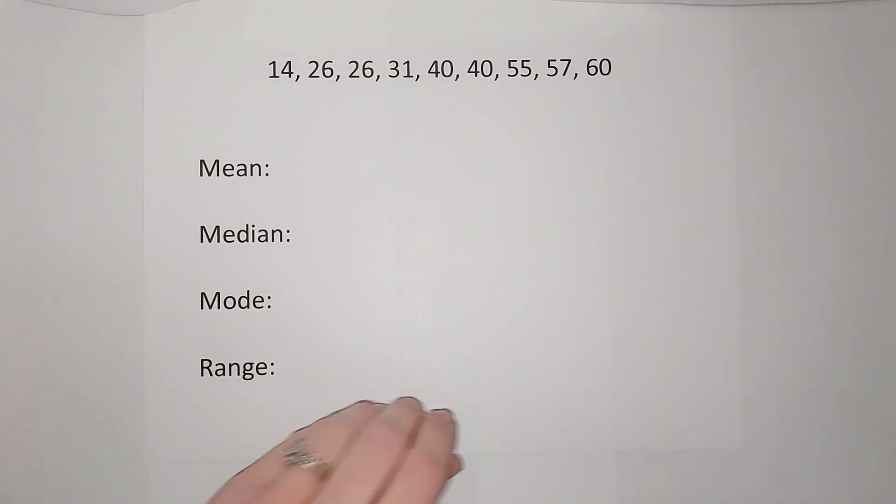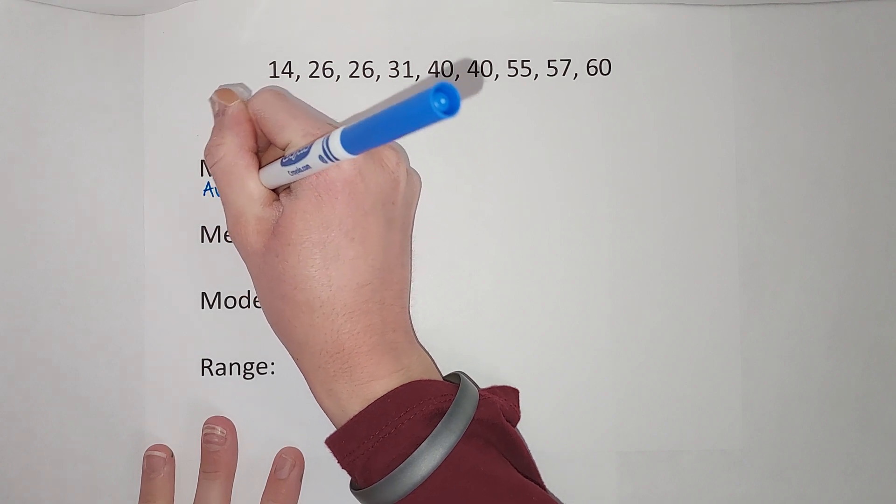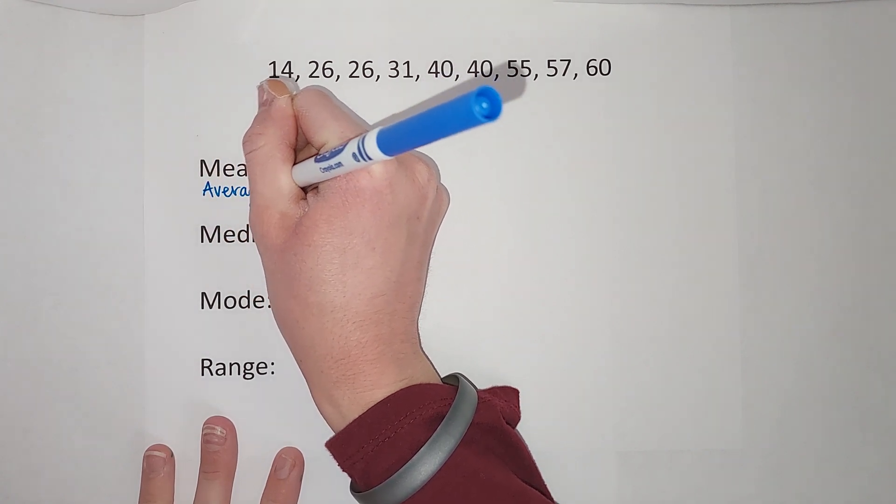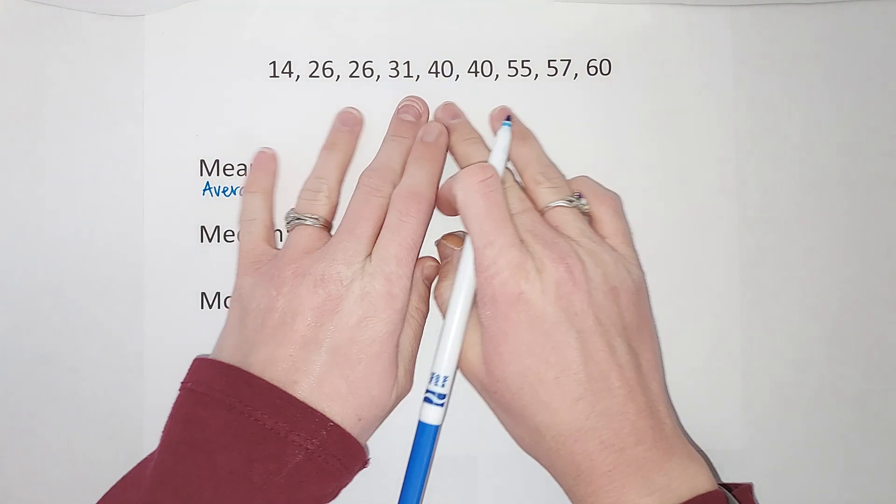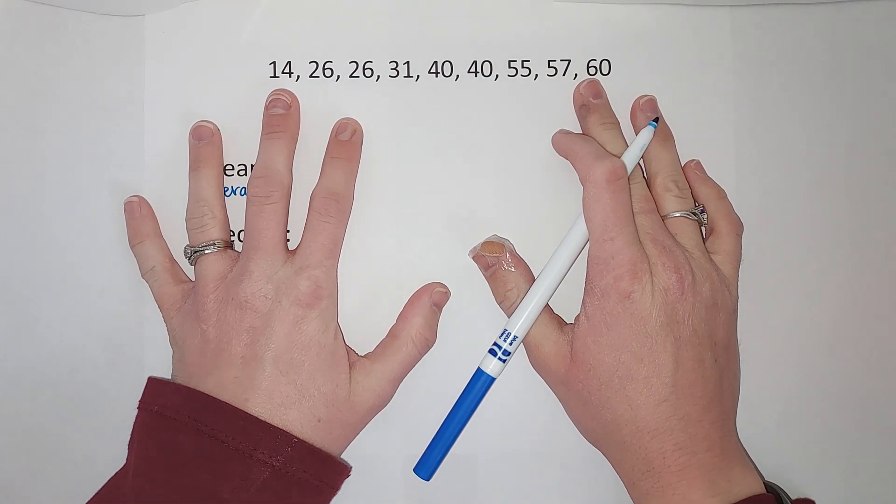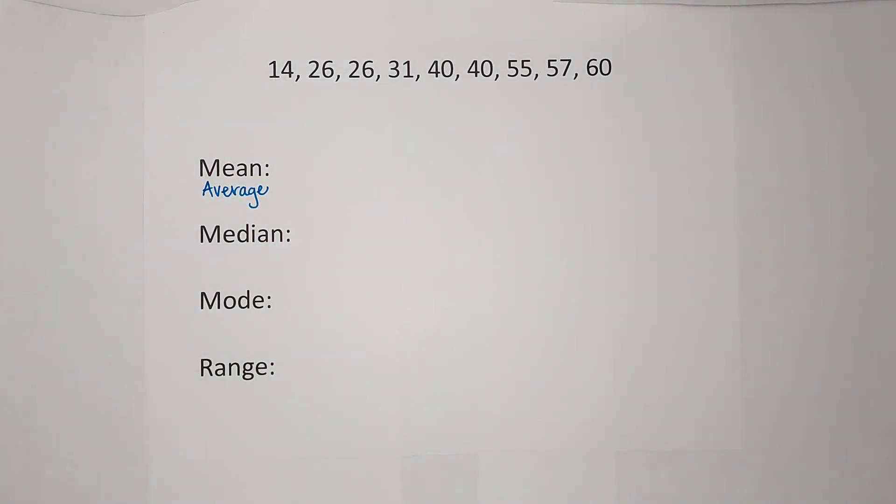First of all, the mean. This is the worst one, but it's okay. The mean is another way to say the average. To find the mean, what we do is we add all these numbers together: 14 plus 26 plus 26 and keep going, and then you divide by how many numbers there are.